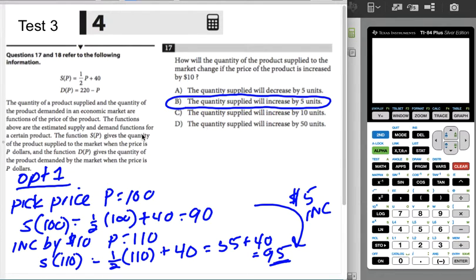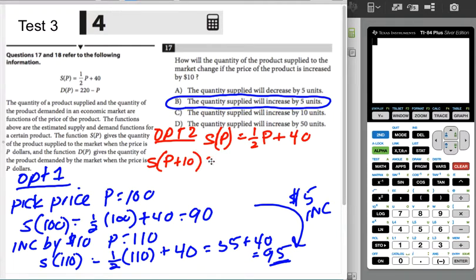The other option is, and I'll be honest, this is the way I would do the problem. The other option is to go a little bit more algebraic. So the original S of P was one half P plus 40, which means that the new price would be P plus 10.